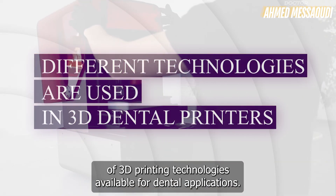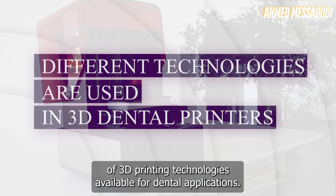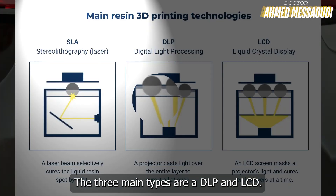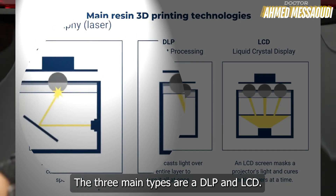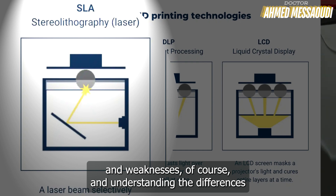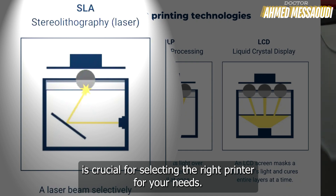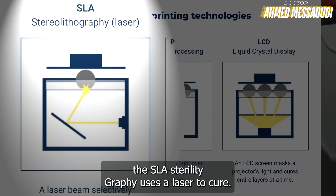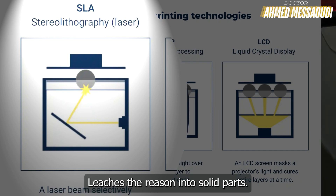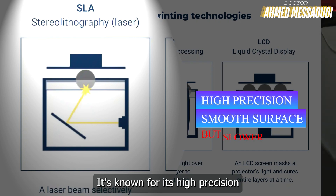First, let's talk about the different types of 3D printing technologies available for dental applications. The three main types are SLA, DLP, and LCD. Each has its strengths and weaknesses, and understanding these differences is crucial for selecting the right printer for your needs.